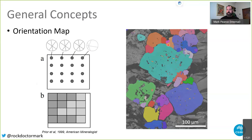Because we have the orientation at each point we can look at stereographic projections of those orientations. In the background there's a grayscale image — a measure of the quality of the EBSD pattern — brighter where patterns are good and darker where they're bad. This nicely picks out grain boundaries within the phases, so we get a lot of information about the microstructure of our rocks.